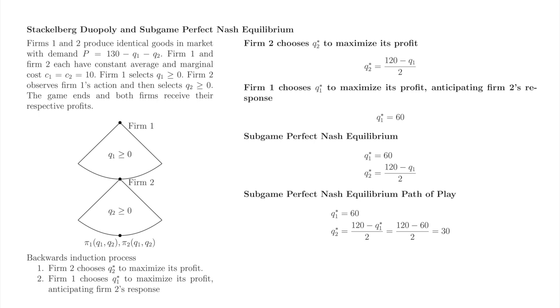After the leader's move, there are some remaining consumers who would still, at some price, buy the good. We call the demand from these consumers the residual demand. The second firm goes second and last, so it is a monopolist with respect to the residual demand. The second, following firm, chooses its monopoly quantity with respect to the residual demand. In this market, 30.